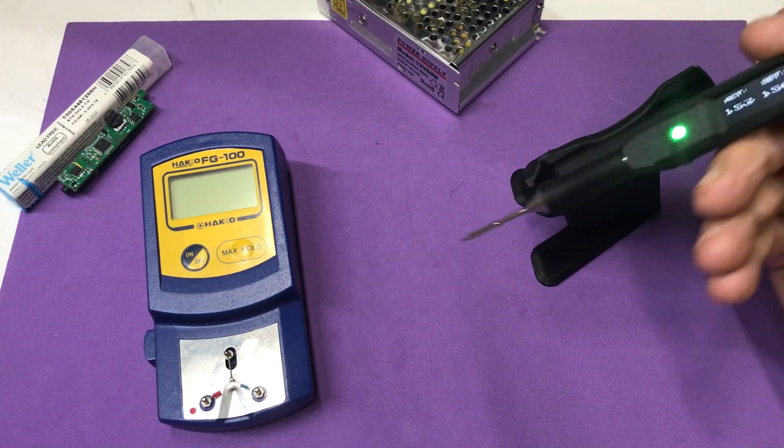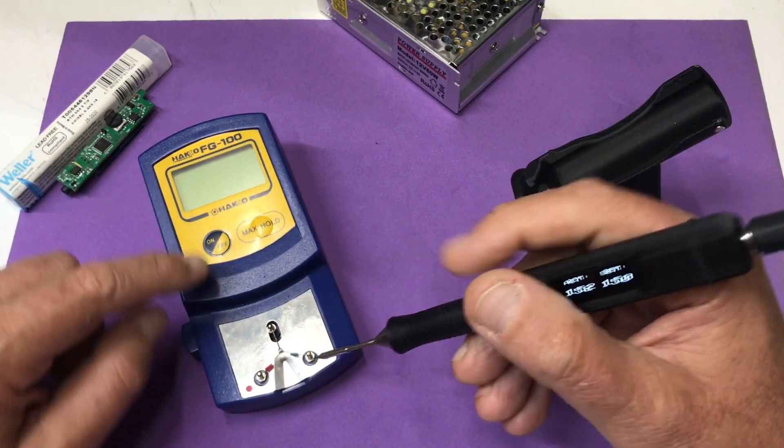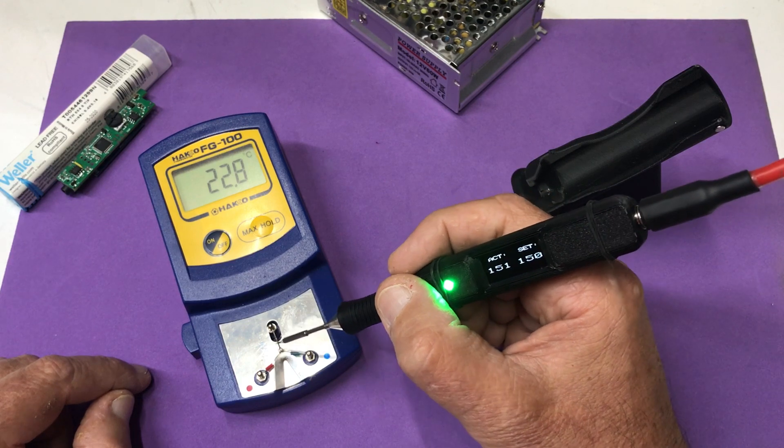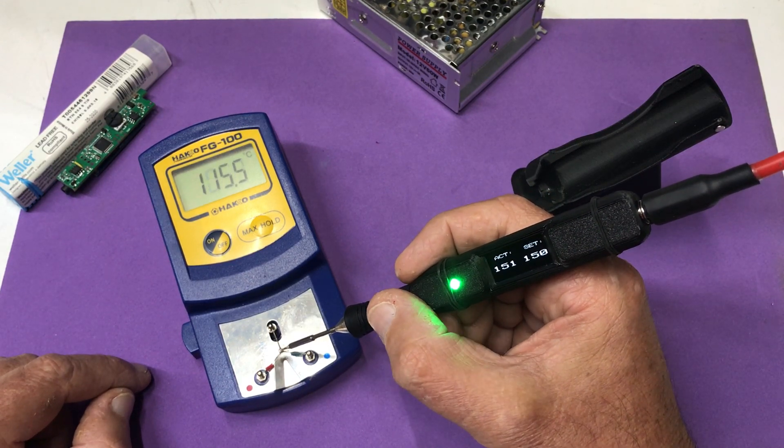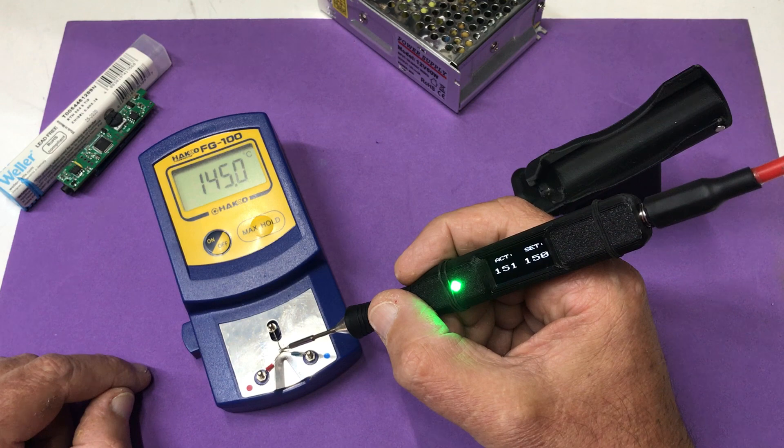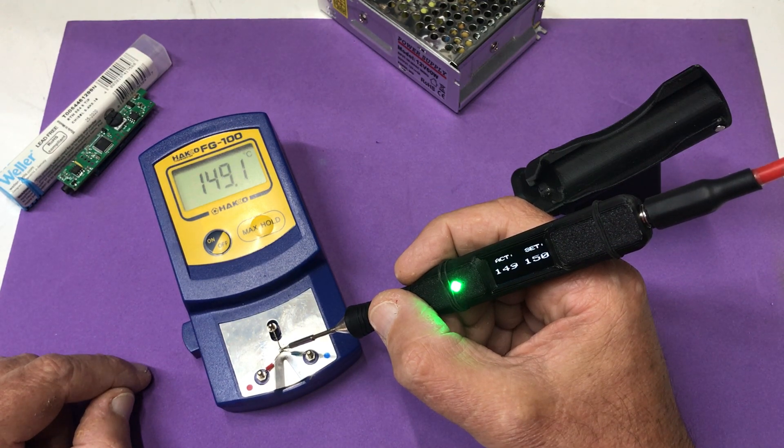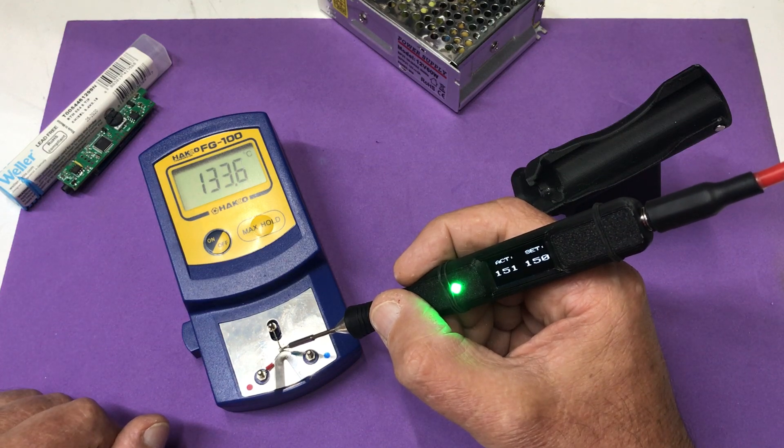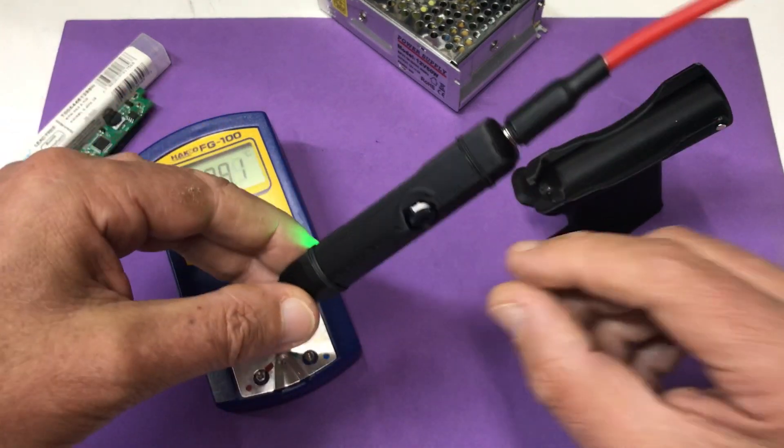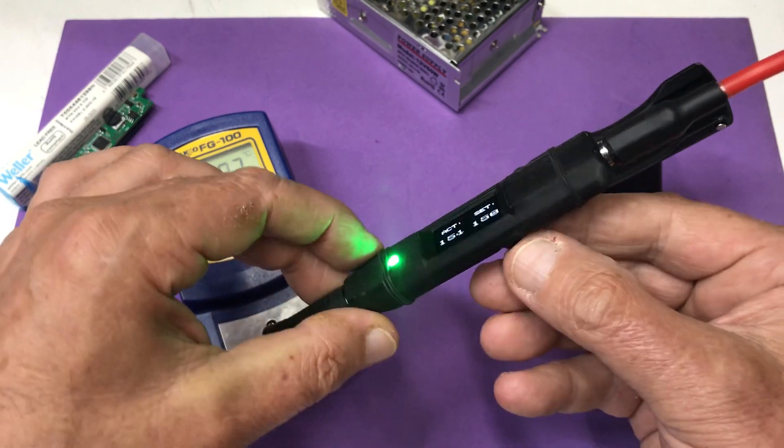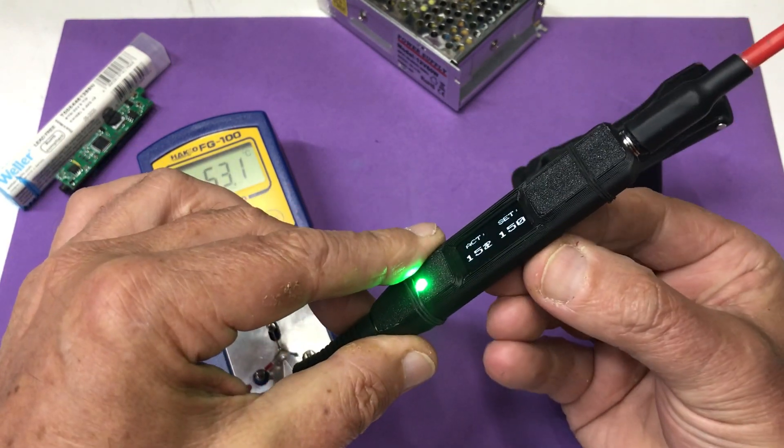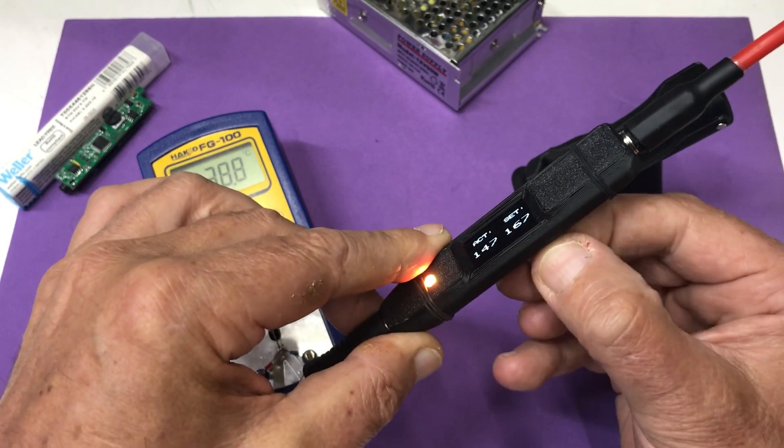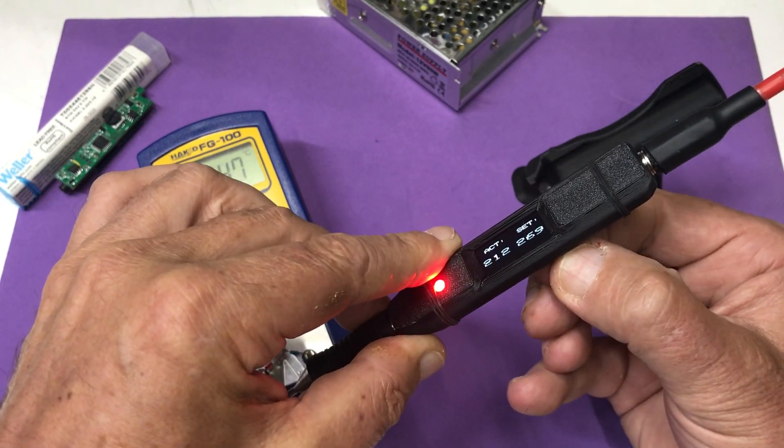Let's check this temperature. Let's see, it's very close. 150 degrees. We can adjust the temperature by a control down here. We can increase, lower, increase to let's say 250.